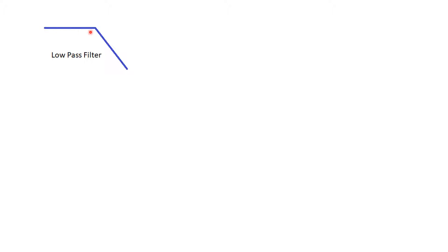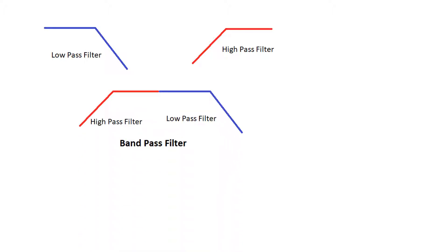In a low-pass filter, there is a pass band where the signal is not attenuated, and then the signal gradually attenuates — that is the stop band. Similarly, in a high-pass filter, the signal is initially attenuated (stop band) and then passes freely (pass band). If we combine the two — first a high-pass filter, then a low-pass filter — the initial and final portions are attenuated while a middle band is allowed to pass. That is why this is called a band-pass filter.